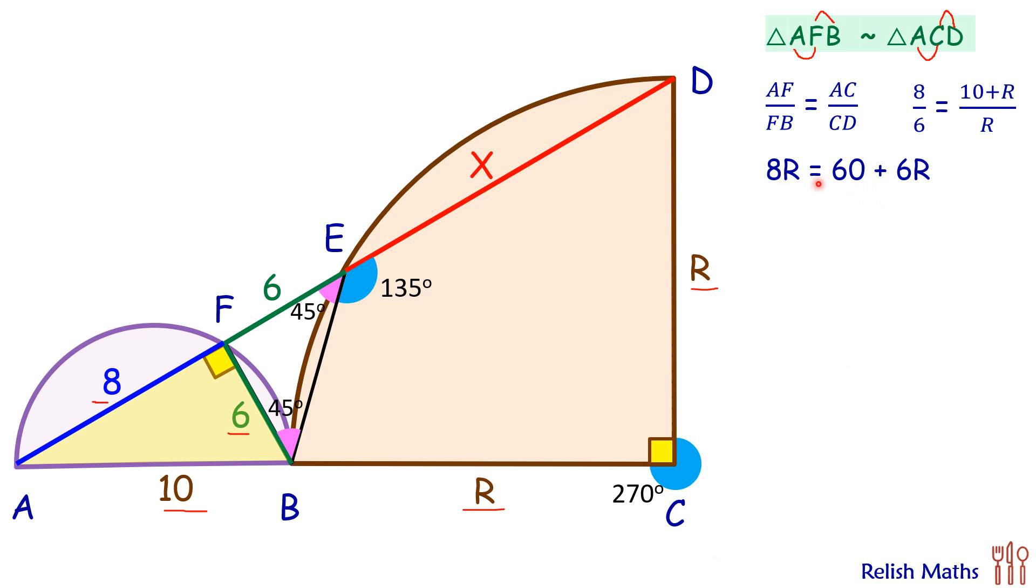Doing cross multiplication, we'll get 8R is 60 plus 6R. Solving it, we'll get R as 30 centimeters. Thus the radius of the quadrant is 30 centimeters.